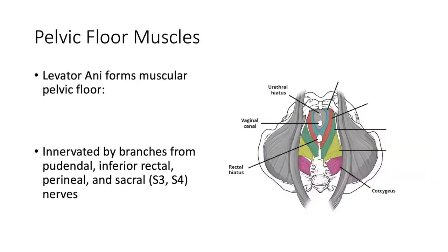In terms of the pelvic floor muscles, the levator ani is frequently referred to as if it's one thing, but it is really the collection of multiple muscles. Can anyone list any of the levators? Sacrococcygeus is a muscle of the pelvic floor — it doesn't really form part of the levators per se, but that is a good one.